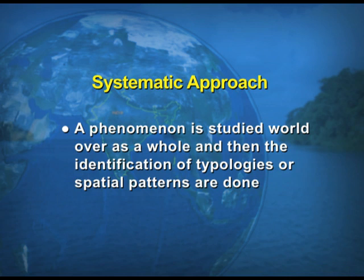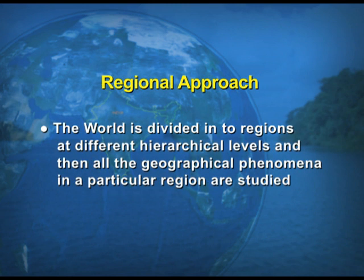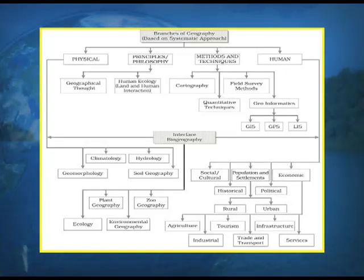As far as the classification is concerned — how we study systematically and how it is different from regional geography — in the systematic approach a phenomenon is studied world over as a whole, and then identification of typologies or spatial patterns is done. In the regional approach, the world is divided into different regions at different hierarchical levels, and then all geographical phenomena in a particular region are studied.